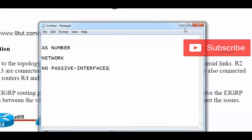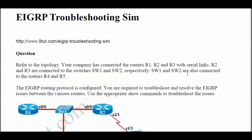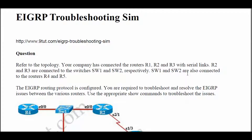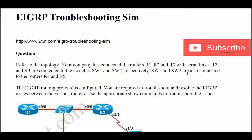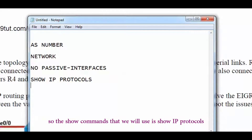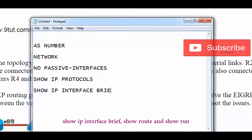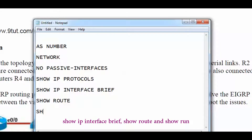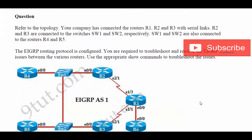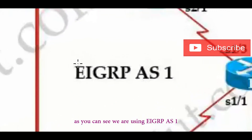Let's read the question. Your company has connected routers R1, R2, and R3 with serial links. R2 and R3 are connected to Switch 1 and Switch 2 respectively, which are also connected to routers R4 and R5. EIGRP is configured and you are required to troubleshoot and resolve the EIGRP issues. The show commands we will use are: show IP protocols, show IP interface brief, show route, and show run.